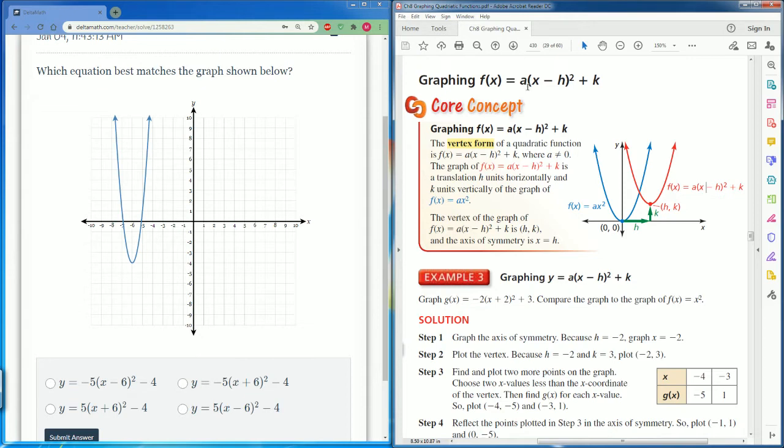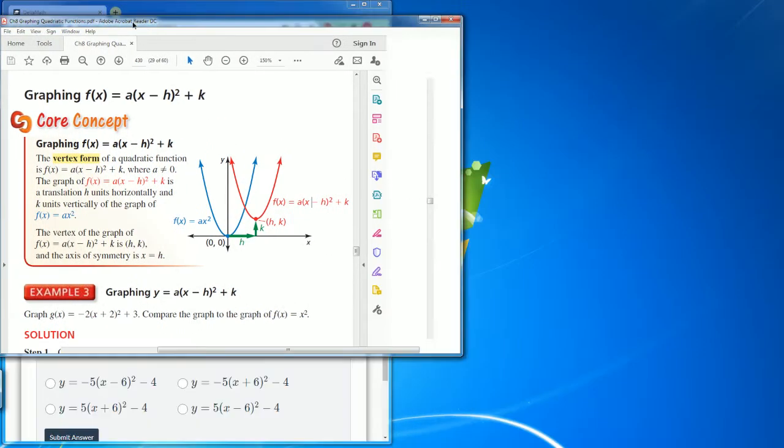It takes the form of a parentheses x minus h squared plus k. The reason why the vertex here is defined as h, k - it is the point. The a refers to if it opens up or down. Let's use that idea to do our problem.